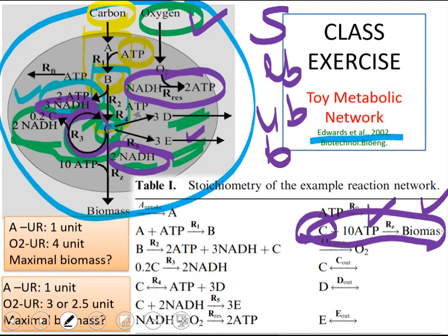There are two alternatives in the question. The first one is if uptake rate of A, which represents carbon, is 1 and uptake rate of oxygen is 4. In this case, what is the maximal biomass rate? And in the second case, if while A is still 1, oxygen uptake rate is 3 or 2.5, what will be maximal biomass production rate? What will be the growth rate?